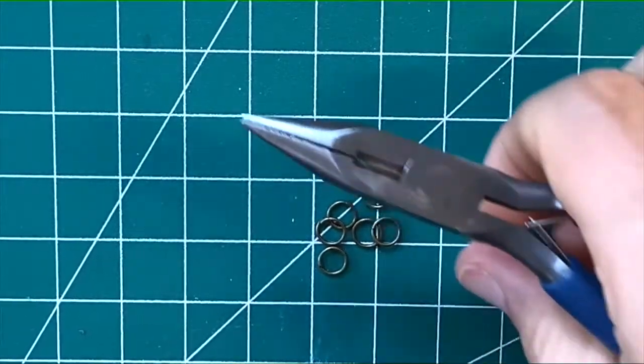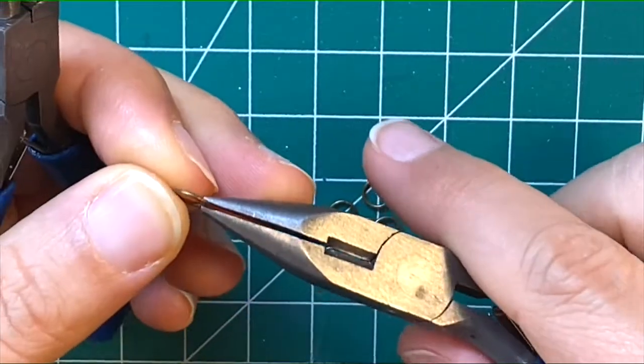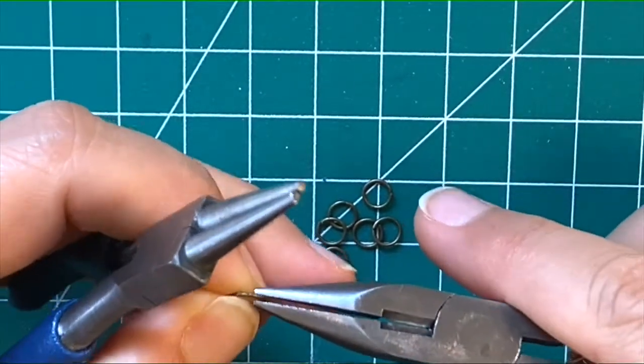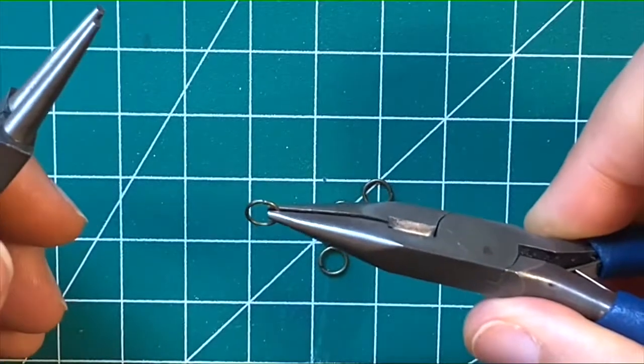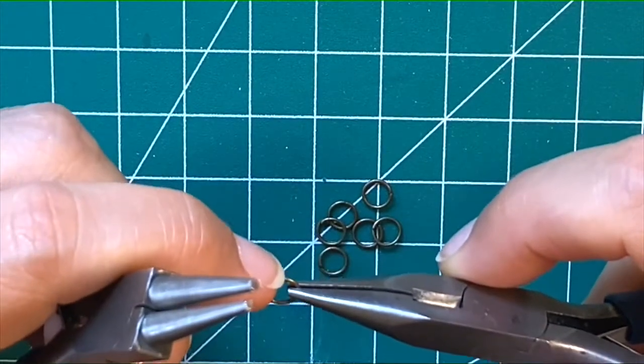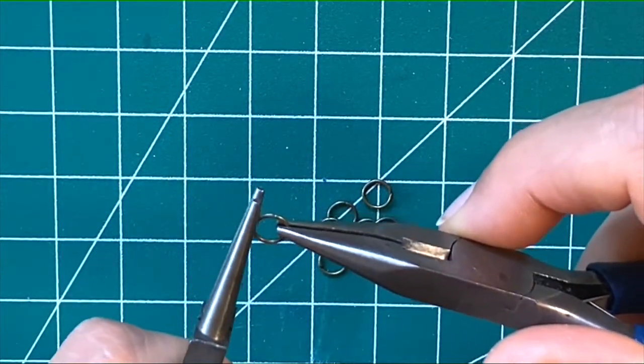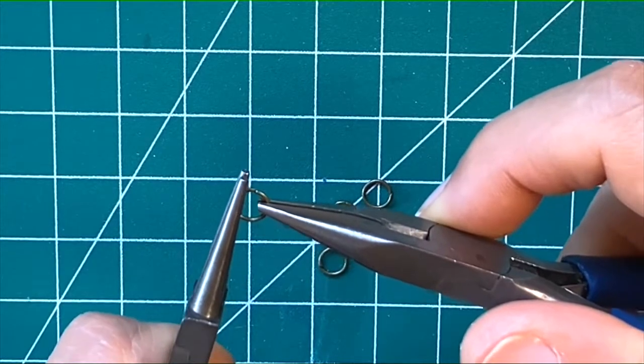Let's talk jump rings. There's a simple, correct way to open and close jump rings that will ensure you don't have a gap. Hold the chain nose pliers on one side where you can see the join, then take your round nose pliers in the other hand.